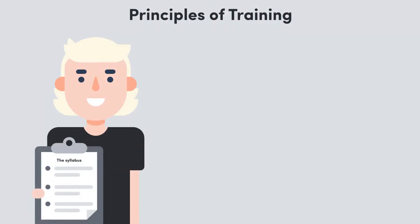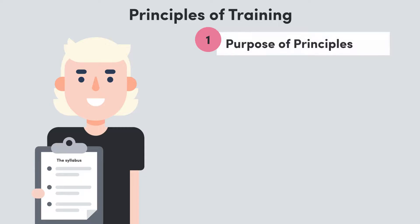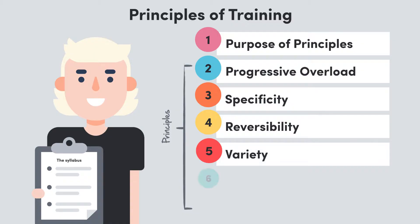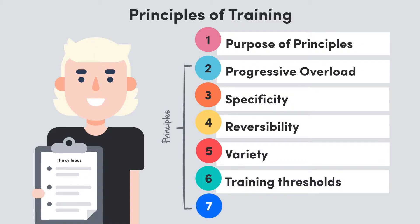The principles of training that we're going to cover make sure that athletes walk out of each training session having accomplished a thing or two and made the most of their time. So make sure you check out those points below. Today we're going to look at the purpose of the principles of training, and then we'll go into some key principles, including progressive overload, specificity, reversibility, variety, training thresholds, and the warm-up and cool-down.